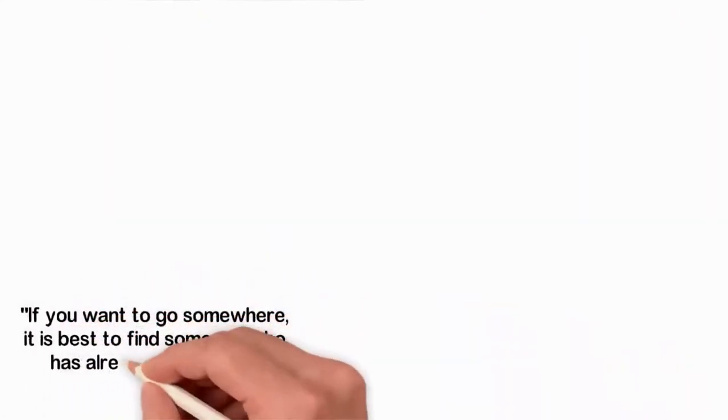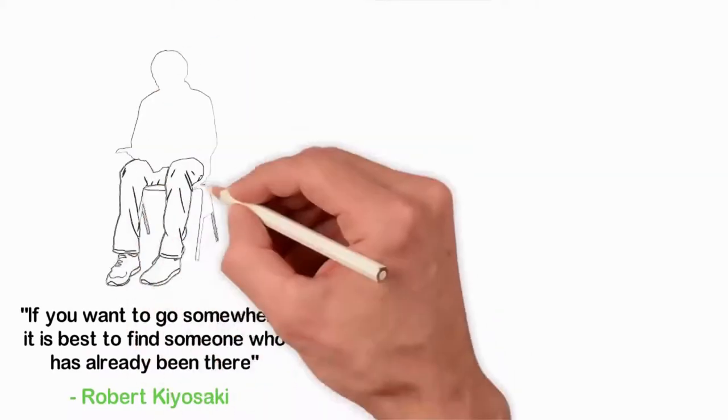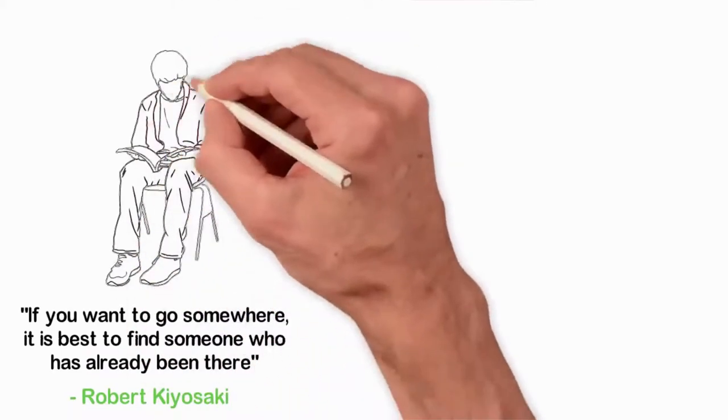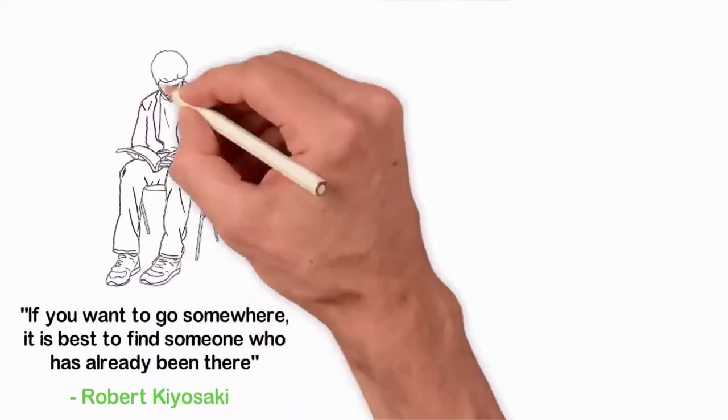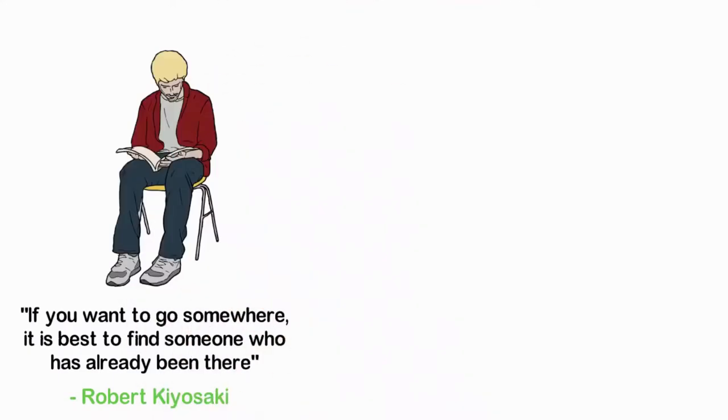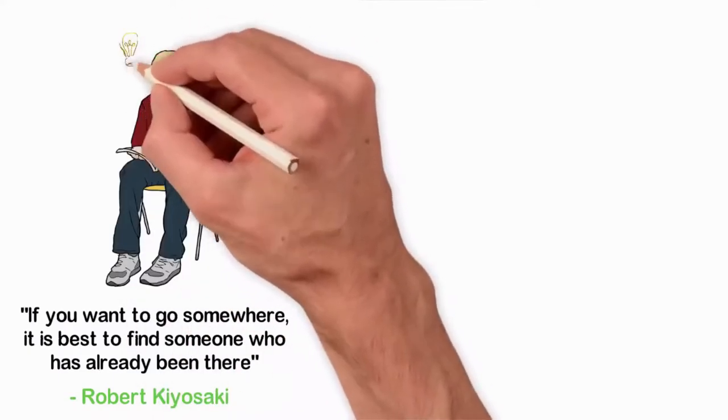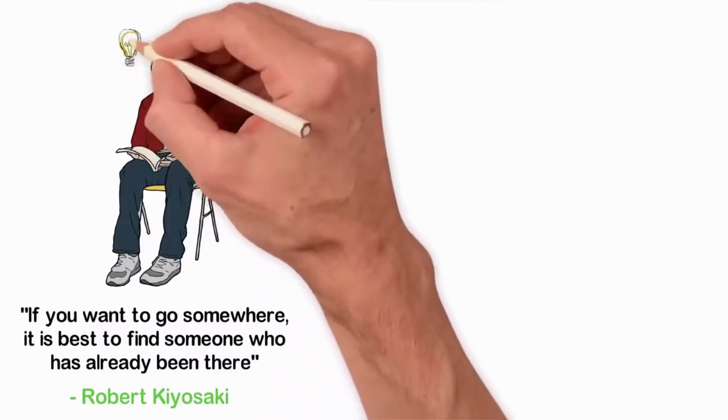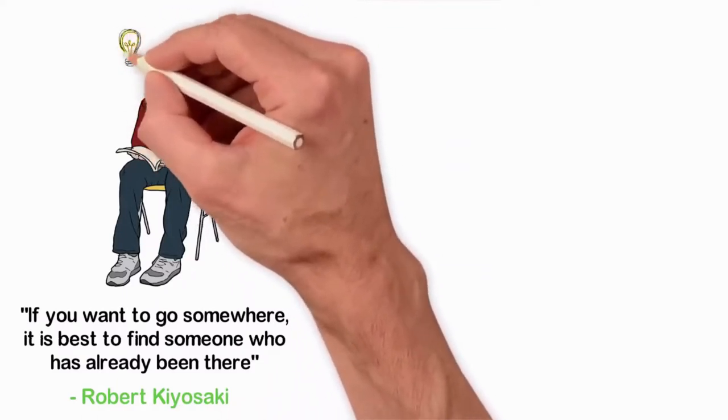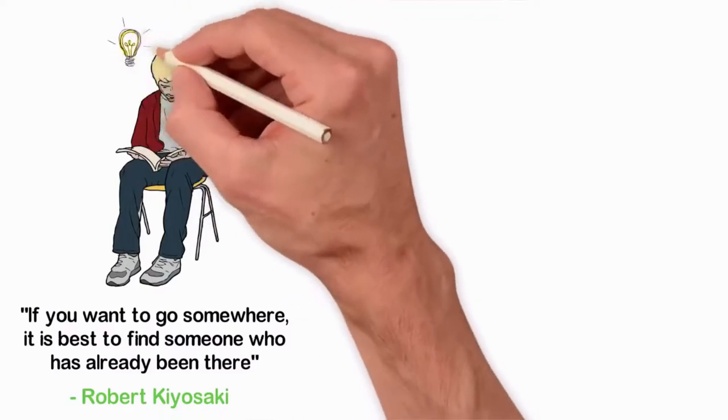If you want to go somewhere, it is best to find someone who has already been there. That's the advice of Robert Kiyosaki and that's my advice for you. If you want to achieve anything, your first duty is to identify at least 10 people who have achieved that particular thing. Look everywhere for their biographies, the books they wrote, the books others wrote about them, their videos and audios if any.